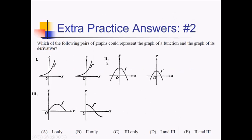For this problem, we want to know which pairs of graphs could represent a graph and its derivative. Taking a look at question 1: we see a graph that is both increasing and concave up. So we would expect the derivative of this to be both positive and also increasing. We have a graph that is positive and increasing — these both look like exponential functions. We know that the derivative of e to the x is also e to the x. So all of these indicate that 1 is a good answer.